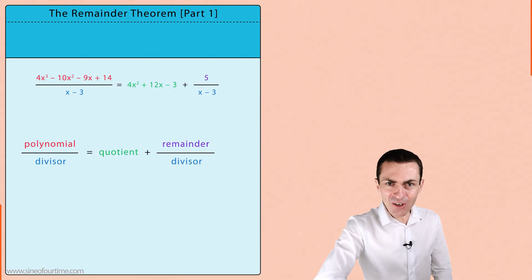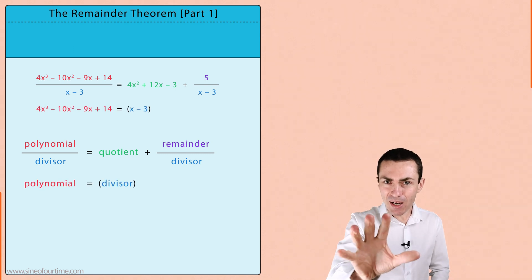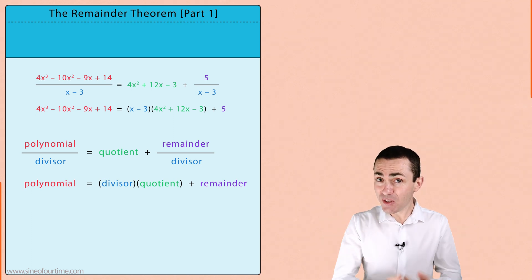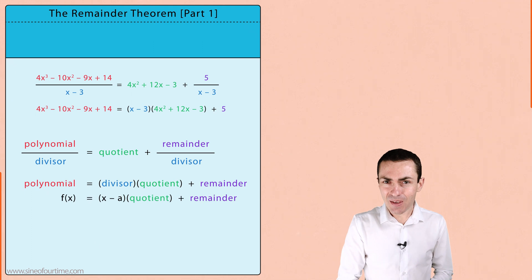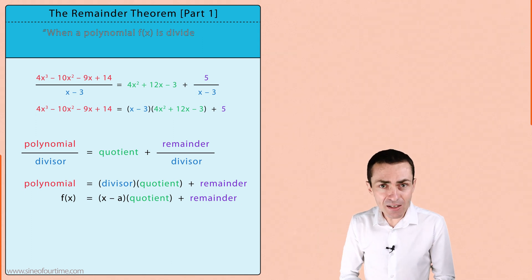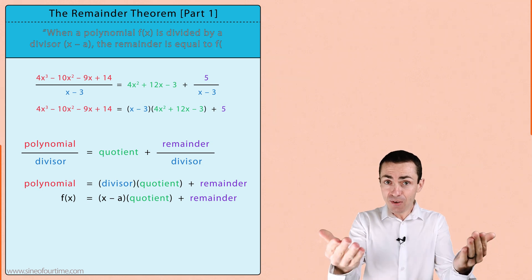In the last video we learned that a polynomial can be written as a divisor multiplied by a quotient plus a remainder where we focus specifically on divisors of the form x minus a. And according to the remainder theorem it stated that when a polynomial function f(x) is divided by x minus a then the remainder is equal to f(a).